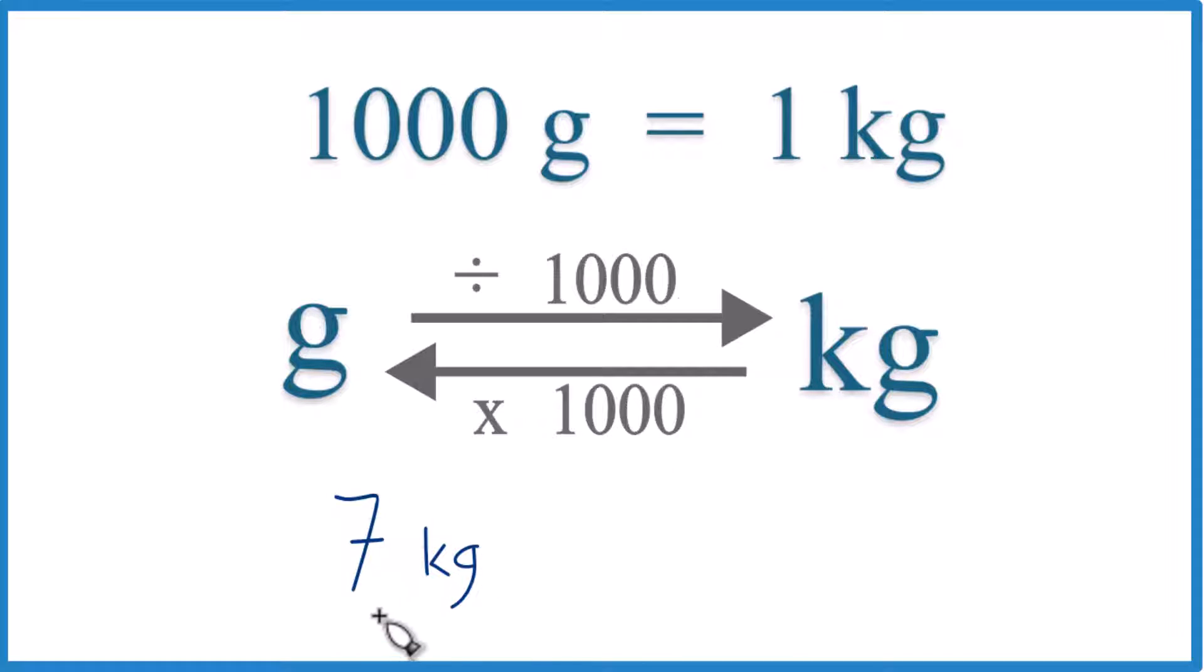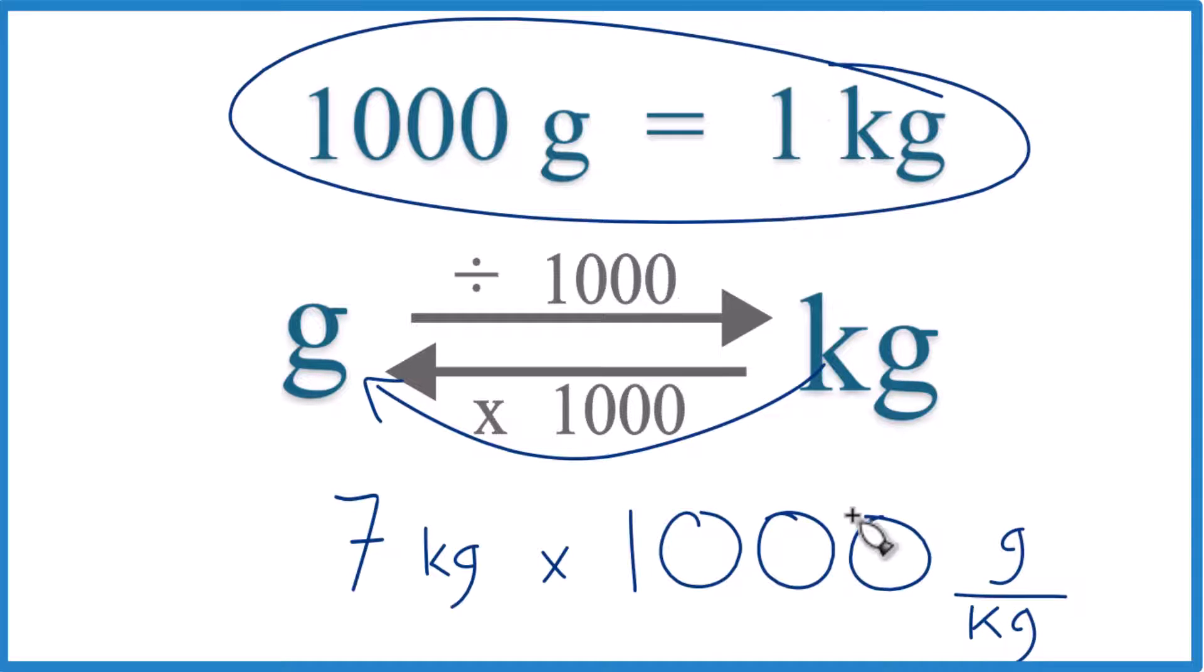Here we have seven kilograms. We want that to be in grams, so we are going to multiply by 1,000, like this. So we have seven kilograms times 1,000 grams per kilogram. That's 1,000 grams per kilogram. That's our conversion factor there.